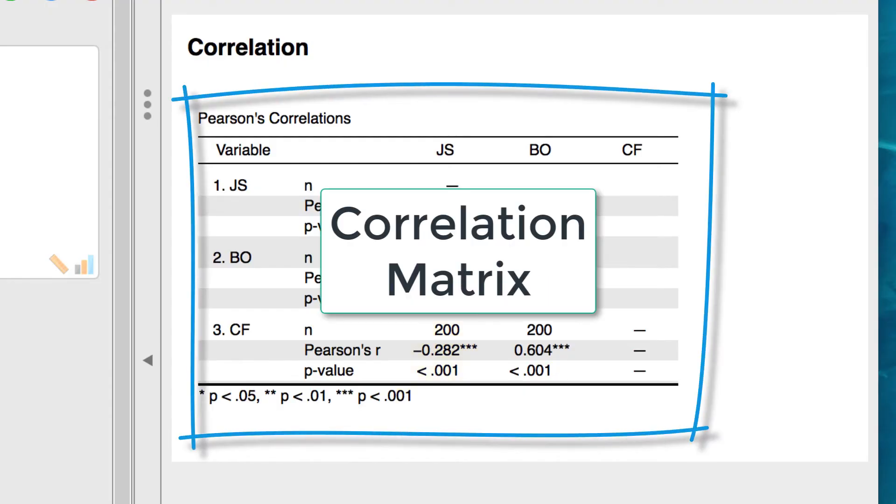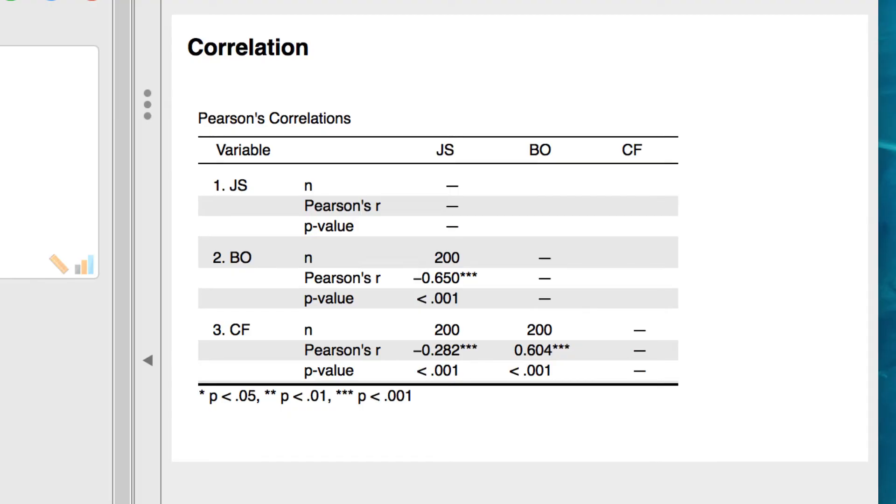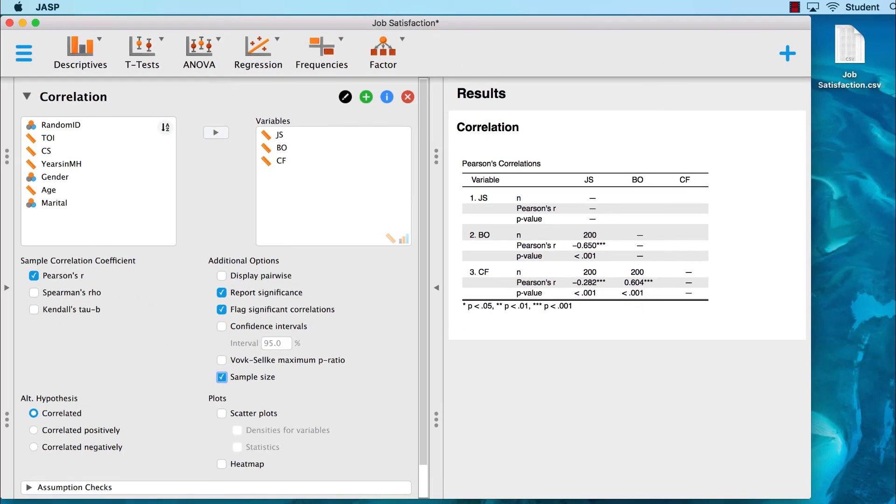This table is called a correlation matrix. Because each variable correlates with itself at a positive one, and this is not very interesting, because every variable correlates with itself at a positive one, those correlations are not reported. Instead, we see only a line. We also see blank spaces in the upper right, rather than reporting the same correlations twice. So the only correlations we need are in the lower left. This table is the traditional correlation matrix, but JASP gives us a more elegant display as well.